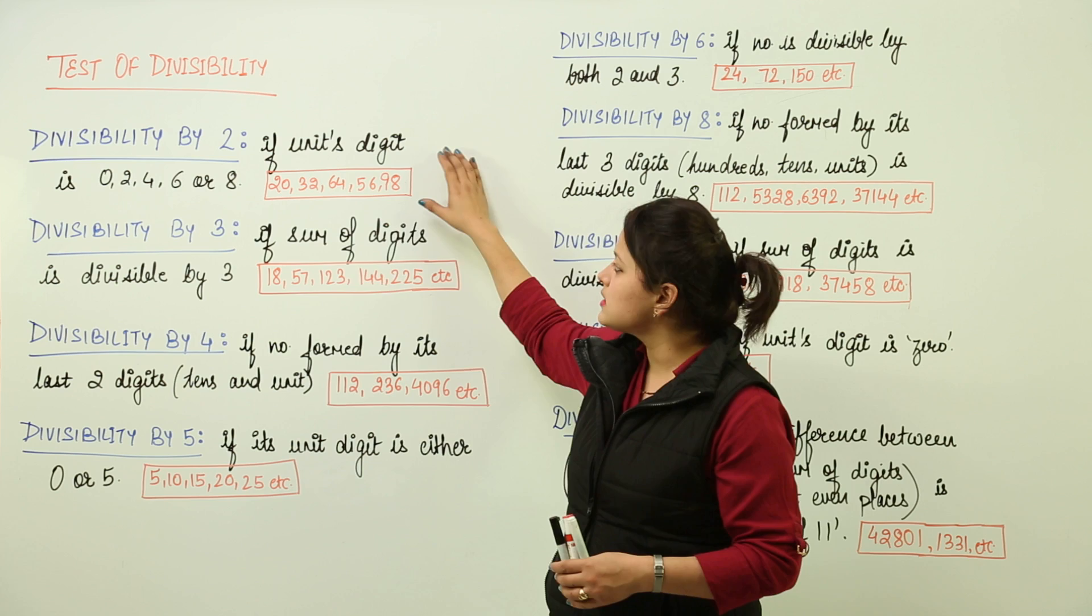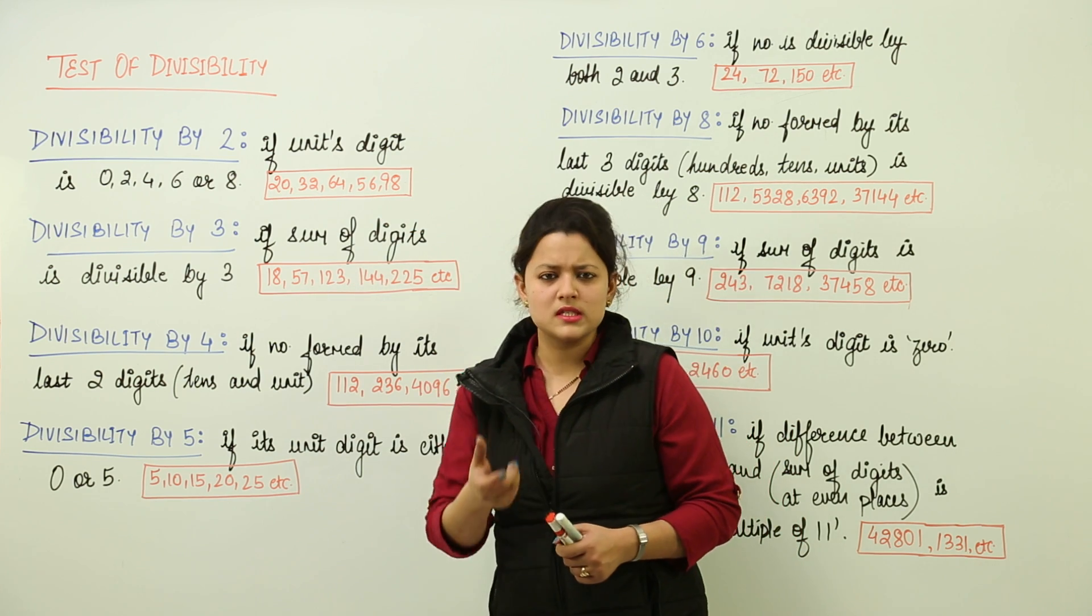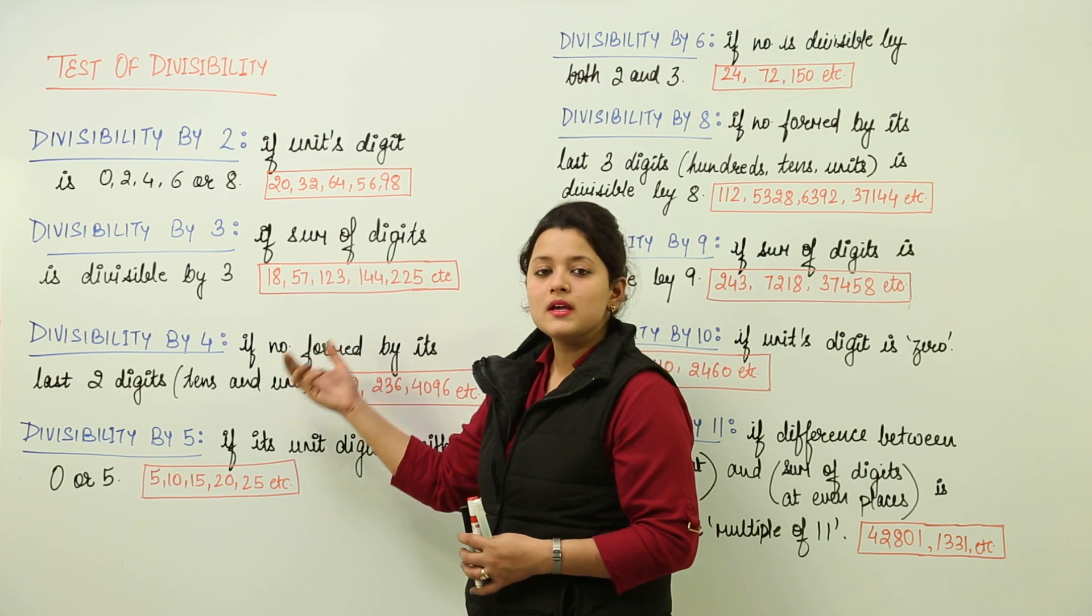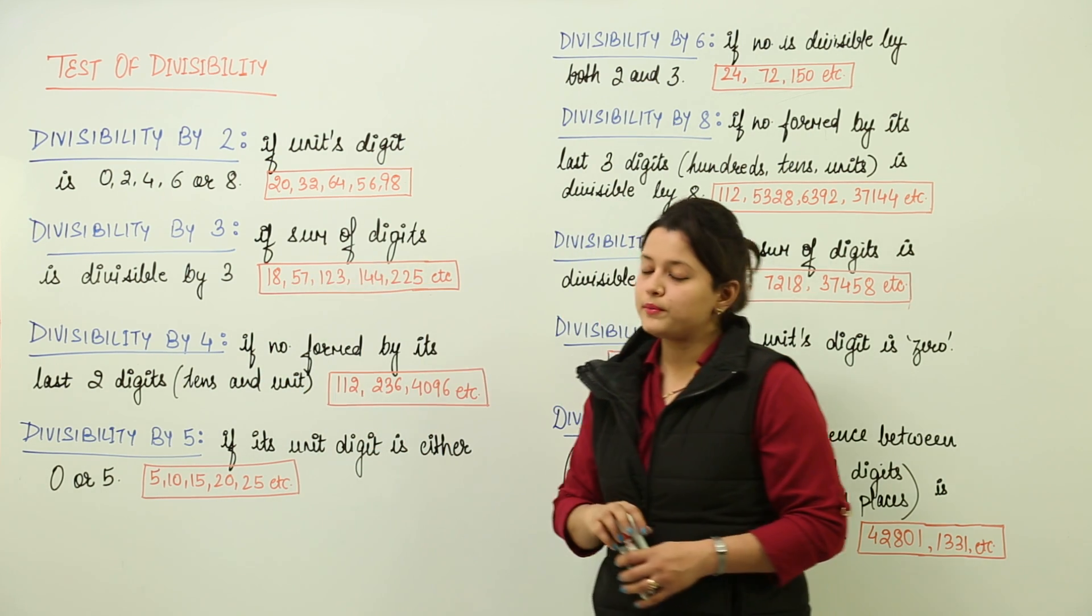We have particular cases, or you can say simple tricks, which you can use to identify whether the given number is divisible by that particular number or not.